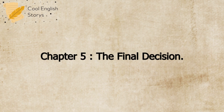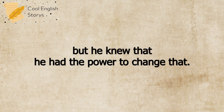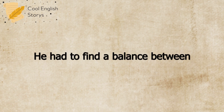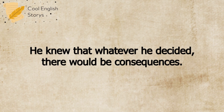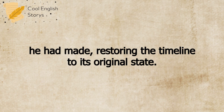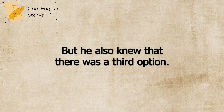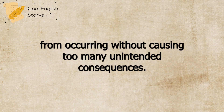Chapter 5: The Final Decision. The Time Traveler emerged from the time stream, back in the present day. He looked around and saw that everything was as he remembered it. The world was still on the brink of disaster, but he knew that he had the power to change that. He took a deep breath and began to make his final decision. He began to weigh the options in his mind. He could leave the timeline as it was, allowing the catastrophic event to occur. Or he could go back in time and undo all the changes he had made, restoring the timeline to its original state. But he also knew that there was a third option: he could go back in time and make a few strategic changes that would prevent the catastrophic event from occurring, without causing too many unintended consequences.